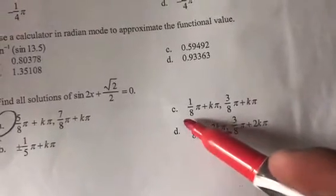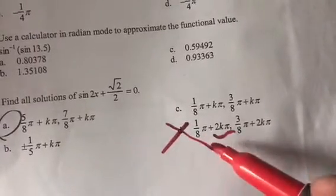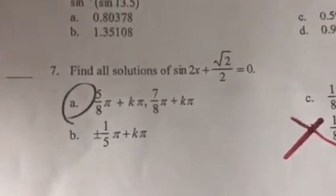1/8 pi plus 2k pi. You do not want 2k pi. That is wrong. Over here you see 1/5 pi. That wasn't even one of the things we had. So that's out of the question.